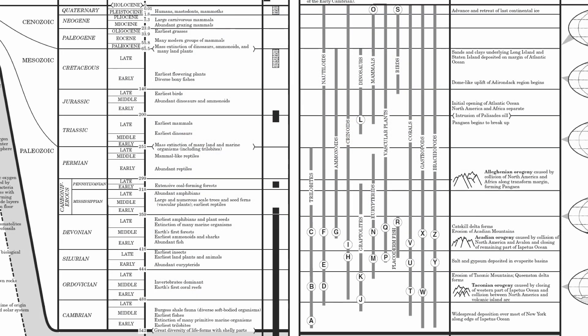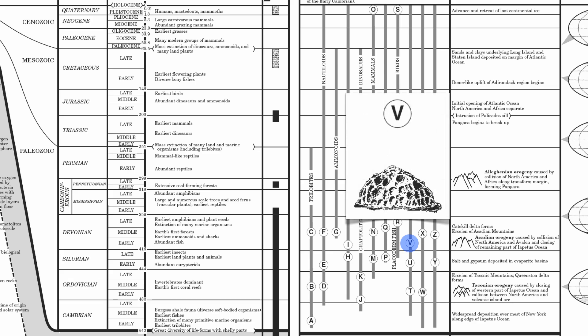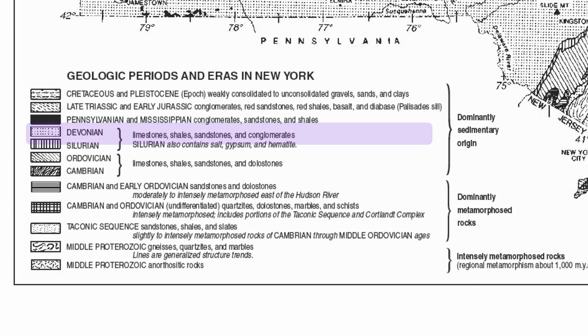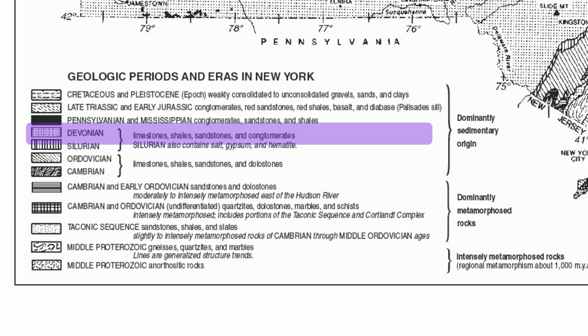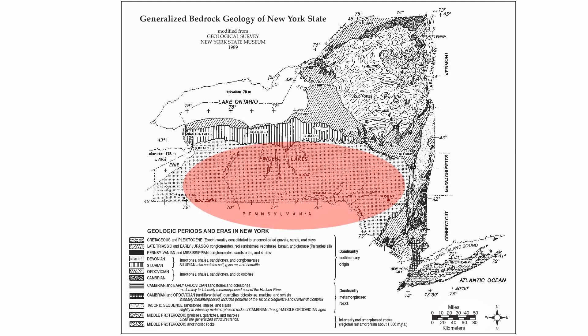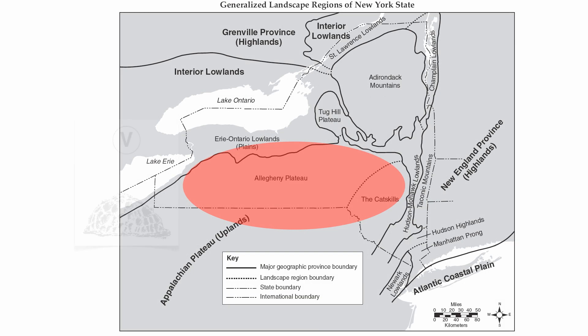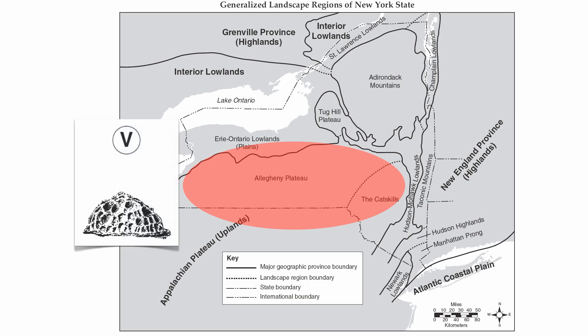Here's another example: letter V, which is a type of coral that lived during the early Devonian. You'd find the Devonian symbol on page 3 — it's found right in this region here. You then superimpose your landscape map, and index fossil V, the coral labeled letter V, is found in the Allegheny Plateau. That's how you use pages 2, 3, 8, and 9 all together.